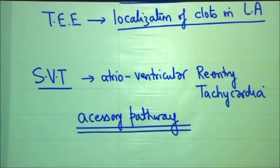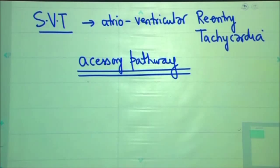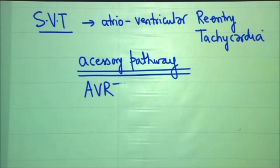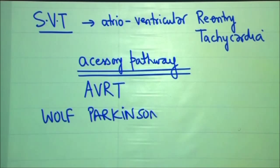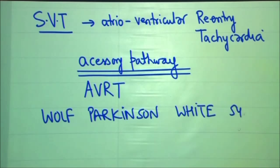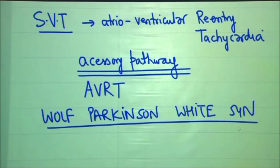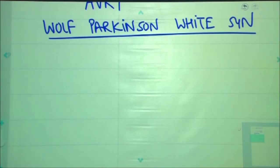This accessory pathway is responsible for abnormal conduction from the atria to the ventricles. The condition where we have atrioventricular reentry tachycardia is known as Wolf-Parkinson-White syndrome, which is characterized by the presence of an abnormal pathway that bypasses the normal conduction system.